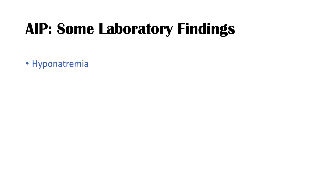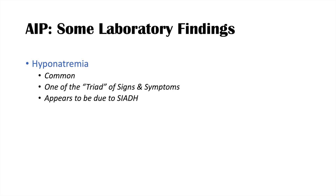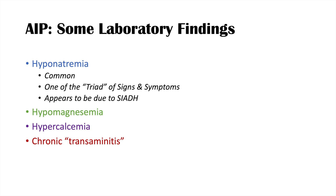Laboratory findings in AIP include hyponatremia - one of the classic triad - which appears to be due to SIADH, or syndrome of inappropriate antidiuretic hormone. We can also see hypomagnesemia and hypercalcemia, and chronic transaminitis, meaning a chronic elevation in liver enzymes.